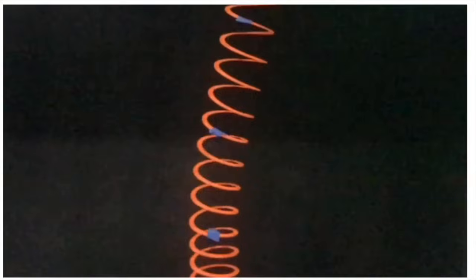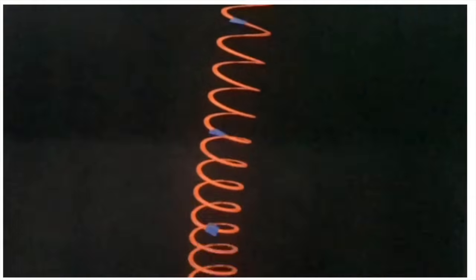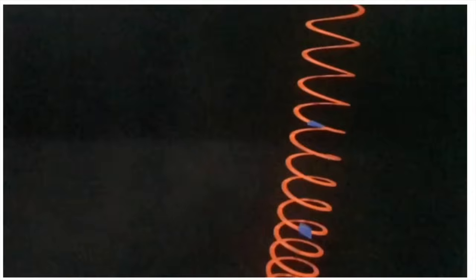Transverse waves can also be demonstrated with a slinky. Again, take a look at the blue pieces of tape. They will represent the disturbance. Notice how the wave is moving from the top of the slinky to the bottom of the slinky, but the blue tape pieces are moving from side to side. The wave is going up and down.